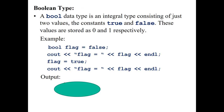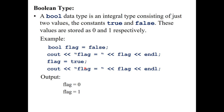The bool type is an integral type consisting of just two values — the constants true and false — which are stored as integers 0 and 1. For example, if I say 'bool flag = false' and output flag, it gives 0. If I say 'flag = true', it gives 1. It will always give a number because what is stored is not literally 'true' or 'false' but 0 and 1.